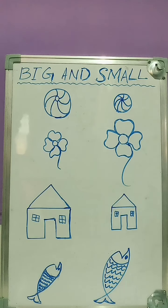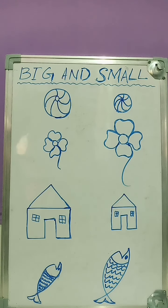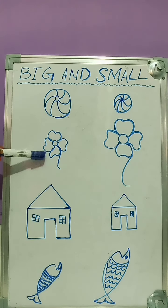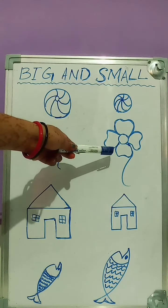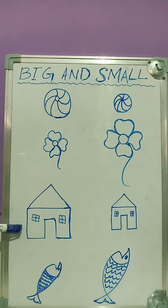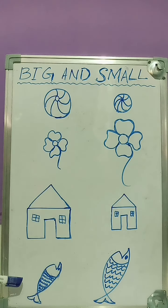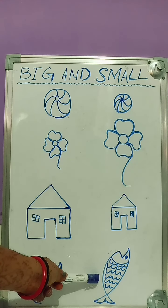Now let's have a look — I have something for you. Here we have pictures of two balls, two flowers, two homes, and two fish. This ball is big and this ball is small. This flower is small and this flower is big. This home is big and this one is big. This fish is small and this fish is big.